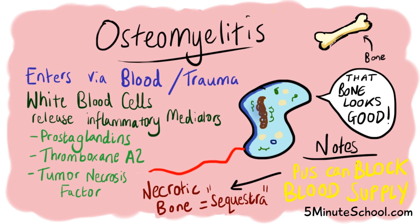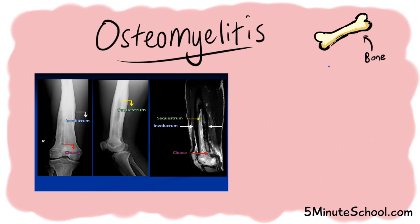Since we now have necrotic infected bone called sequestrae, the body's response is to create new healthy sclerotic bone around it called involucrum. An X-ray can distinguish between acute and chronic suppurative osteomyelitis by showing the amount of involucrum around the necrotic bone. Greater density of involucrum suggests the infection has been present longer, making the diagnosis most likely chronic.